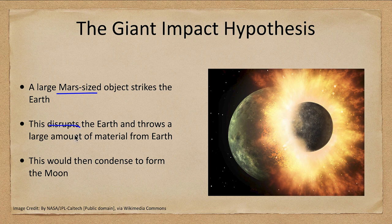This Mars-sized object strikes the Earth, disrupts it, and throws a large amount of material from the Earth. This material then condenses to form our moon. The impact occurred very early in the history of the Earth, just as it was forming.